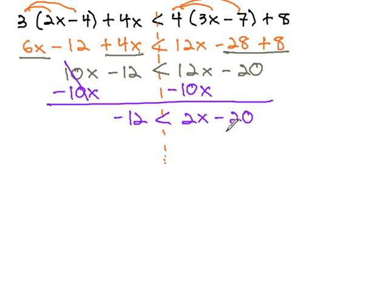We now have a two-step equation, which we can solve by adding 20 to both sides, giving us 8 is less than 2x.